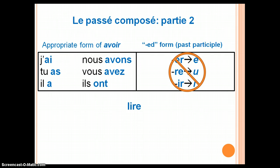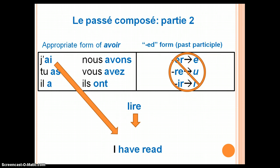Another example of an irregular verb with its own unique past participle form is lire. Suppose I want to say, 'I have read.' First, I select the appropriate form of avoir — in this case, j'ai. However, since lire is irregular, I must use its special past participle form: lu. Now I have j'ai lu — I have read, I read, or I did read.